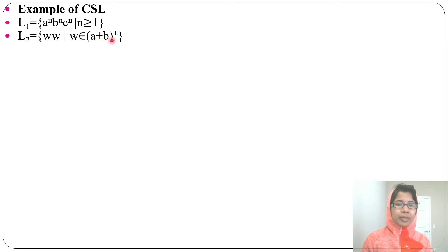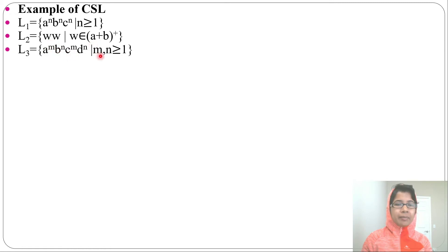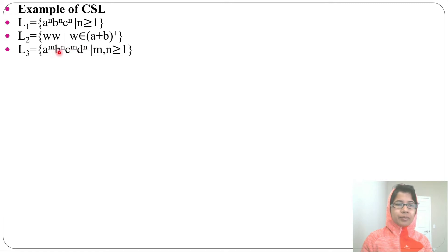Another example: {WW | W ∈ (a+b)+}. Next, a^m b^n c^m d^n where M, N ≥ 1. You cannot design a PDA for this, because in a stack you cannot execute this comparison — the number of A's must equal the number of C's and the number of B's must equal the number of D's, but at the top of the stack there will be B, so you cannot compare C with B. But on a tape you can execute this, so you can design an LBA or Turing machine for this language.